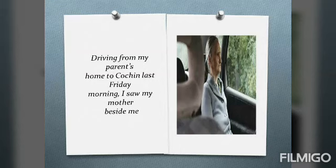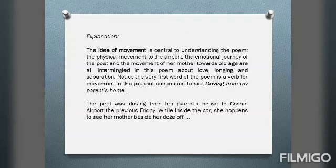Now let us start the poem. 'Driving from my parents' home to Cochin last Friday morning, I saw my mother beside me.' The idea of movement is central to understanding this poem. The first is physical movement to the airport — both of them are moving towards the airport. The emotional journey of the poet also unfolds: initially she was thinking about her mother's death, then she tried to get rid of that thought and looked outside, and again while parting she was thinking about her mother's death, trying to hide those emotions behind a smile. This is the emotional journey and movement of her mother towards old age, which are intermingled in this poem about love, longing and separation.